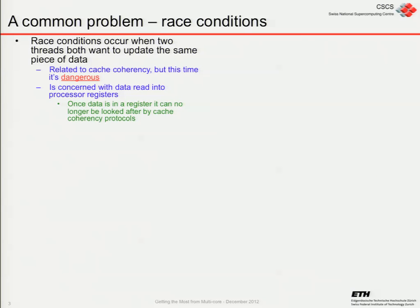A race condition occurs when two or more threads all want to update the same piece of data. It's related to cache coherency and thrashing, but this time it's dangerous rather than just a performance hit. It's concerned with data when you load it into a processor register. Once the data's in a register, nobody else can see it. Cache coherency is where everybody is aware of everybody else's cache — if somebody updates their cache, you get a message saying your data is bad and you should update it. But when something's in a register, it's hidden from view — like your own private stash in your wallet.